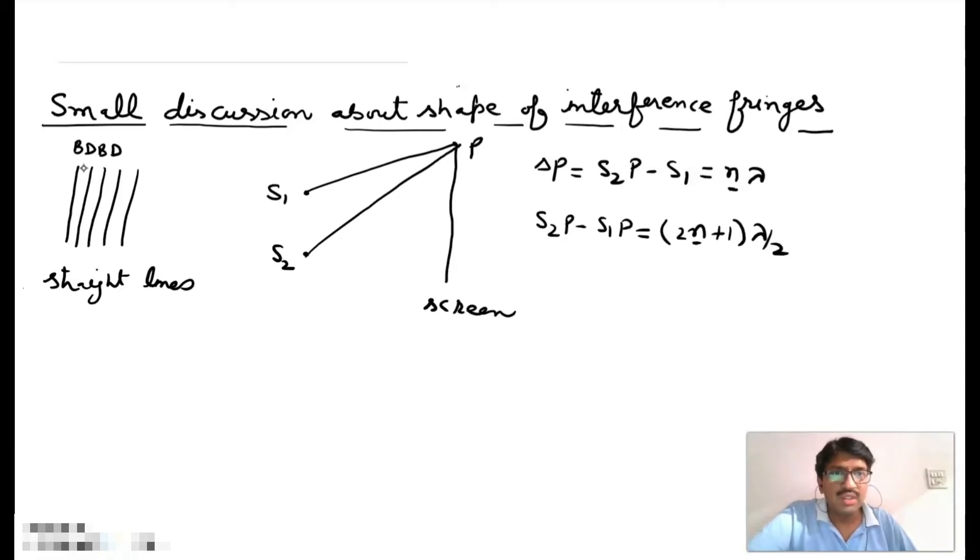if n is fixed and we can say that if n is constant then S2P minus S1P is also constant as wavelength of light is already constant. So we can say that S2P minus S1P is constant